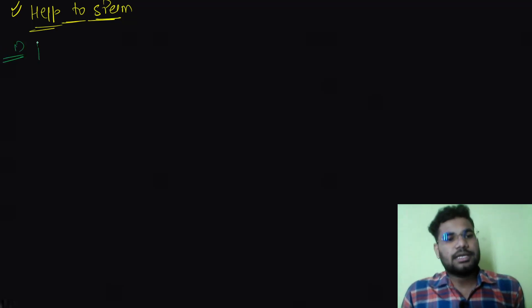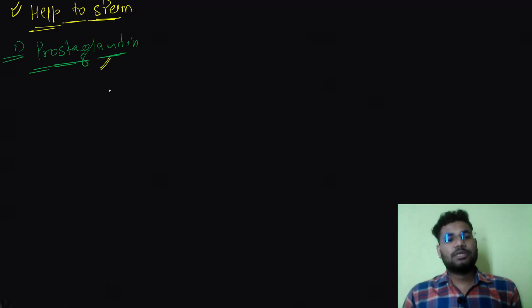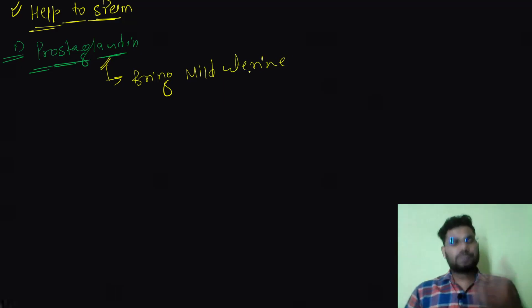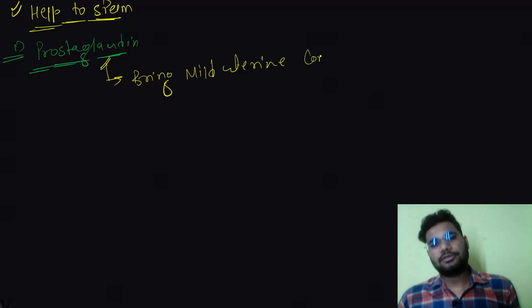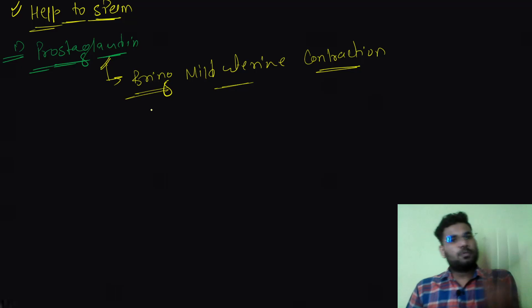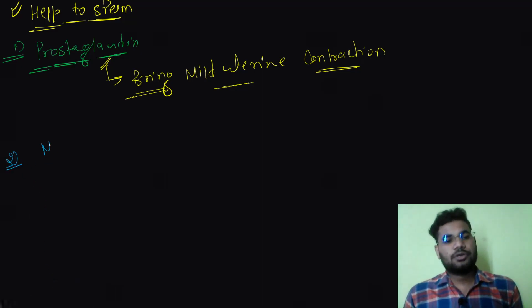Now, what are the factors that help sperm move? First, prostaglandins — seminal vesicle secretions also contain prostaglandins. These prostaglandins bring mild uterine contractions. Due to these contractions, sperm move upward towards the uterus. What else helps the sperm move? The mitochondria of the sperm.